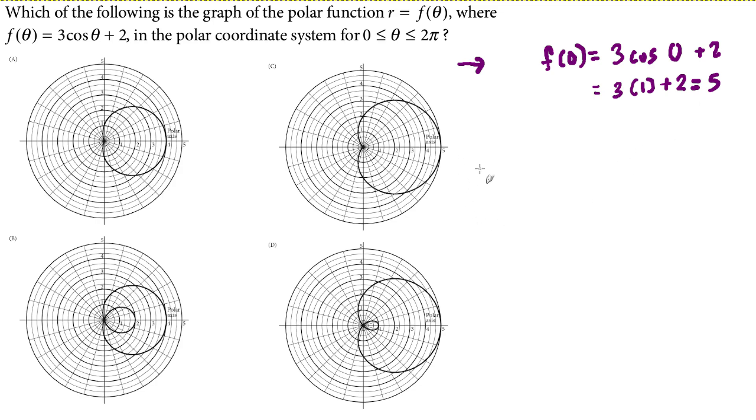If I'm pointing directly left, that's probably going to be enough to get me there. So directly left is pi radians, so f of pi equals 3 cosine pi plus 2. The cosine of pi is negative 1, so I have 3 times negative 1 plus 2. 3 times negative 1 is negative 3, plus 2 is negative 1.